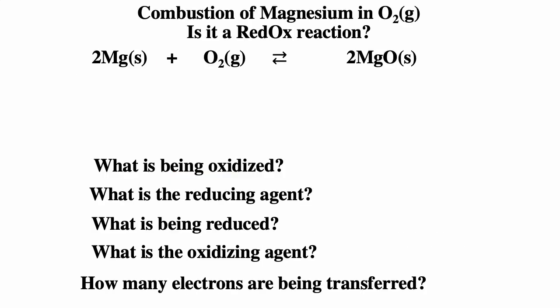Now let's look at the combustion of magnesium in oxygen — is it a redox reaction? To figure that out, we look at oxidation states. If there's a change in oxidation state of any element, it has to be an electrochemical reaction. Magnesium by itself has a zero oxidation state; oxygen by itself, zero oxidation state. In magnesium oxide, magnesium has a plus two and oxygen has a minus two. Both magnesium and oxygen are changing oxidation states, confirming this is a redox reaction.